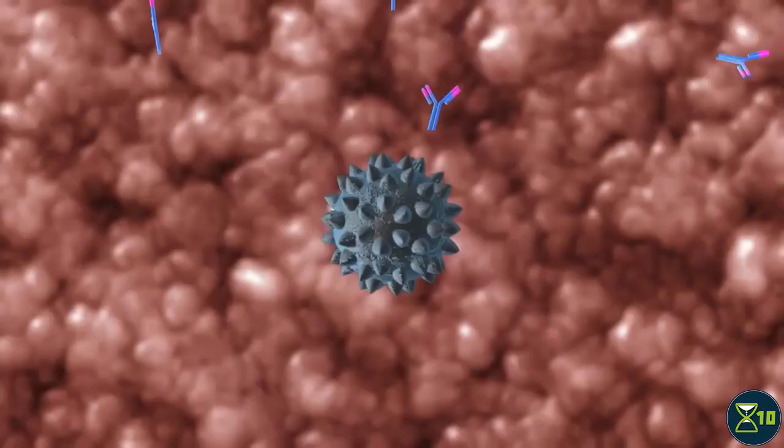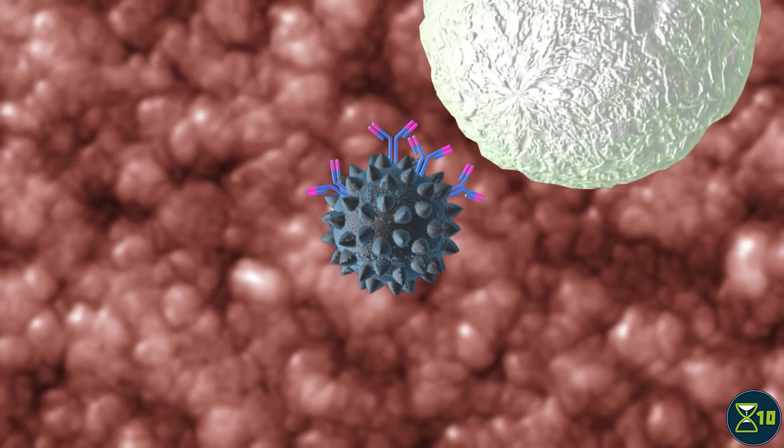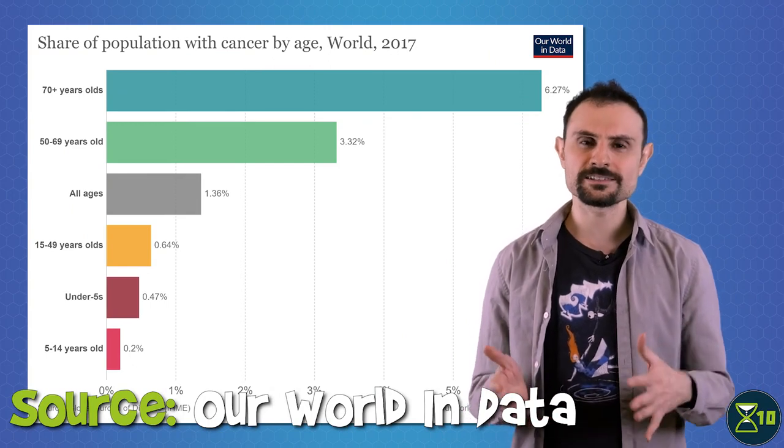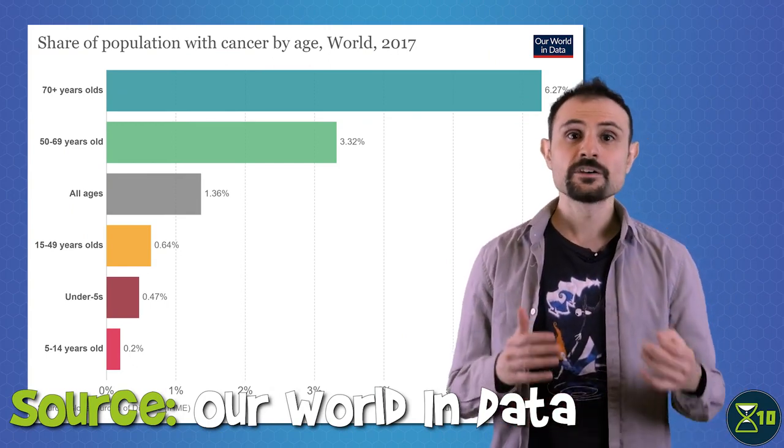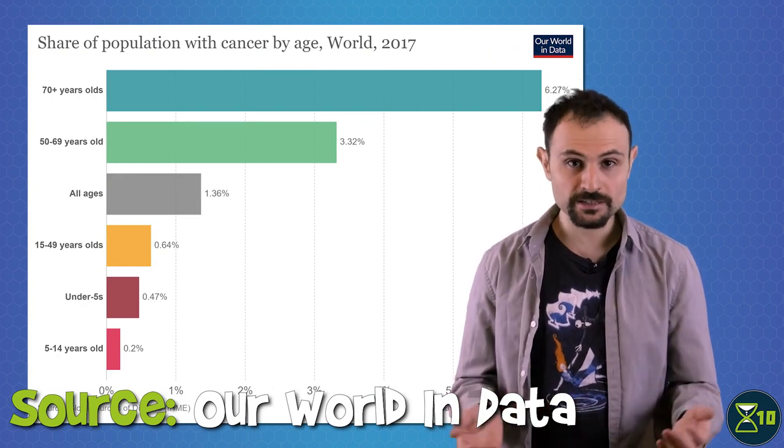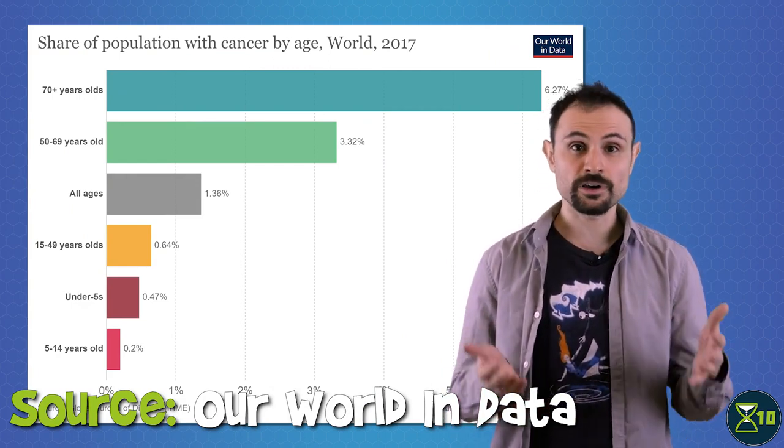T cells don't recognize only viruses and bacteria as threats, they also target cancer cells. This ability lies at the core of modern cancer immunotherapy, which seeks to fight cancer by using the immune system against it. Research suggests that as the immune system declines, so does the ability to fight cancer, which may partly explain why cancer rates skyrocket with age.